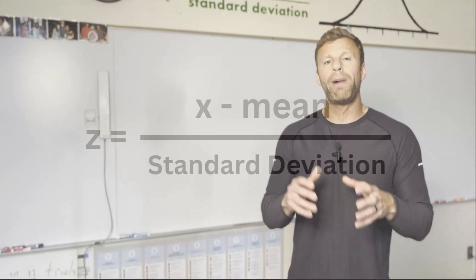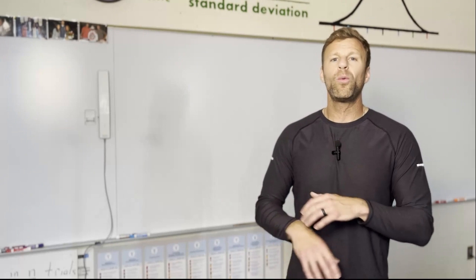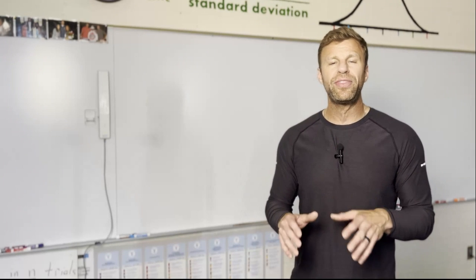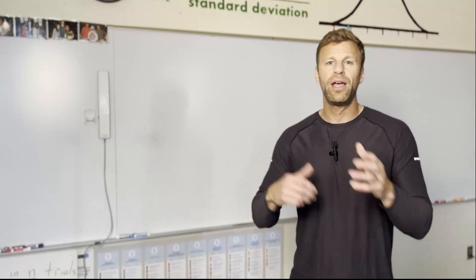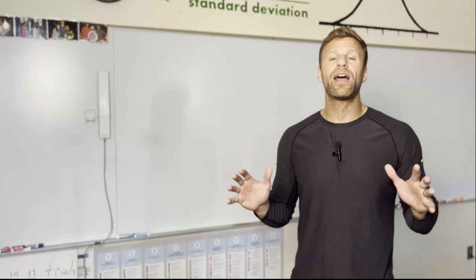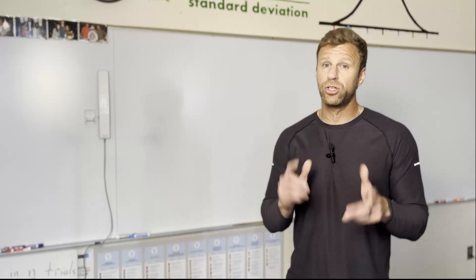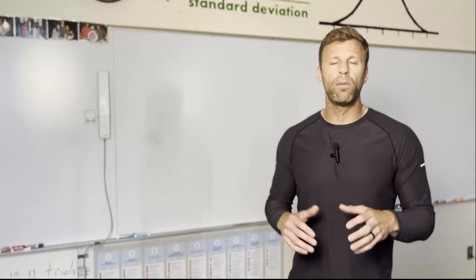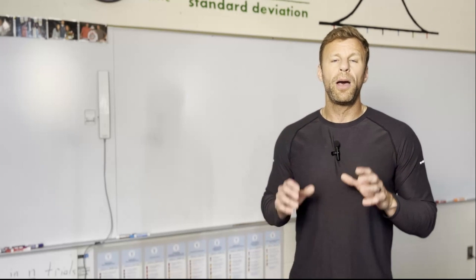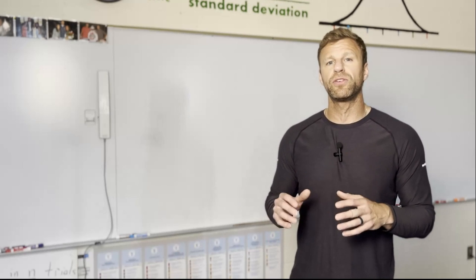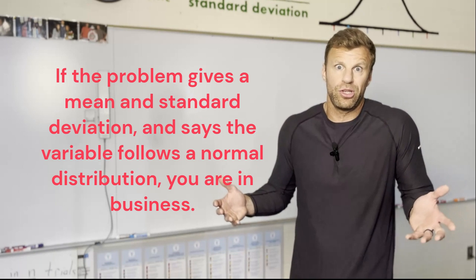A Z-score is a particular value minus its mean divided by a standard deviation. If your data follows a normal distribution, you can take any particular value in that distribution, convert it to a Z-score, and then use the normal model to find a proportion or probability above, below, or in between — whatever you want. If you read a problem and it says the distribution follows a normal model, a normal distribution, or is approximately normal, you're going to use the normal model.